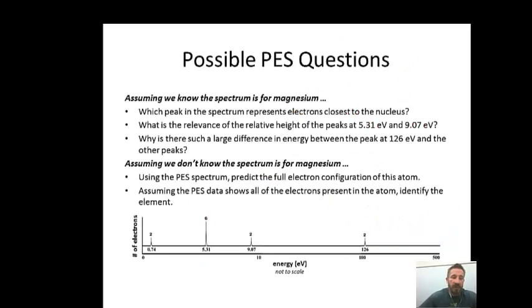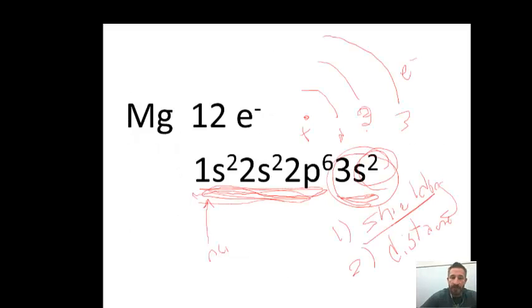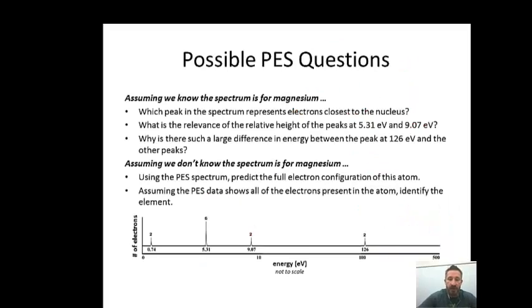With that understanding in mind, let's look at the next graph. A couple of things we want to be able to answer from this graph. This time the graph has all been put onto one scale, so that may make it a little easier to read. It still is not to scale. Notice we go from 0 to 10, and we have almost equal distance between 10 to 100, and then almost to 500. Which peak in the spectrum represents electrons closest to the nucleus? The ones closest to the nucleus would require the most energy, and we would think these right here would be our 1s electrons. Those would be the ones that are closest to the nucleus.